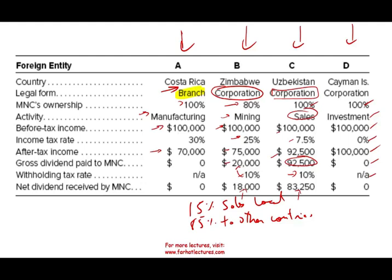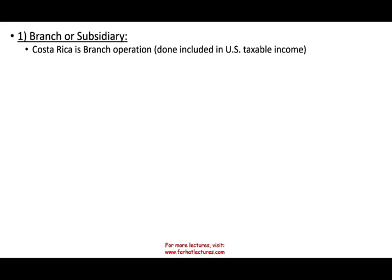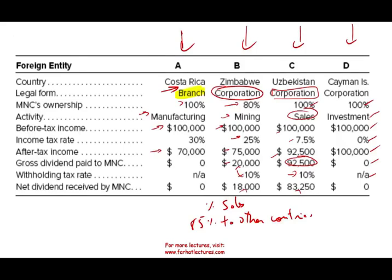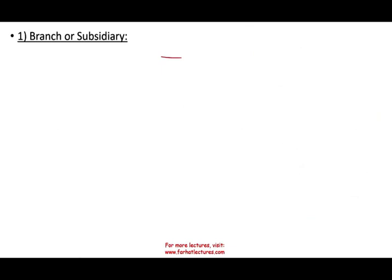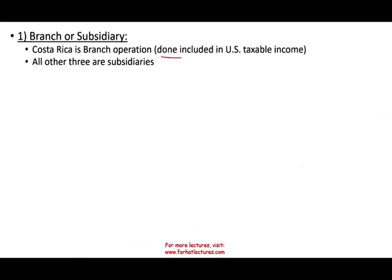We're going to determine how much of the income of these subsidiaries or branches is included in the US. We already figured out the branch — the Costa Rican operation is a branch, so that $100,000 is 100% included in US taxable income. The other three are subsidiaries. Once we determine they are subsidiaries, we have to check whether they are controlled foreign corporations.